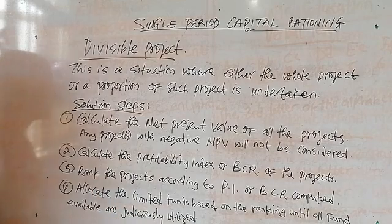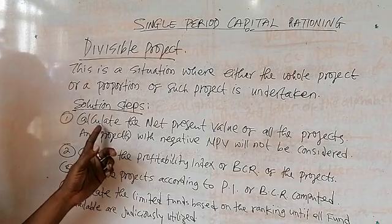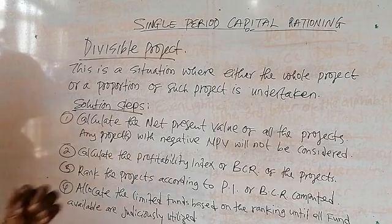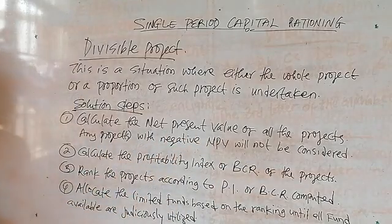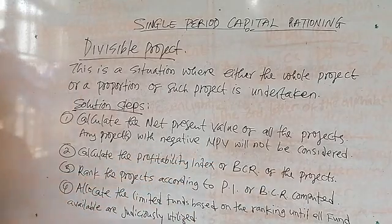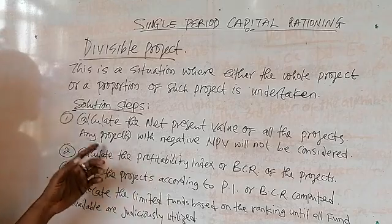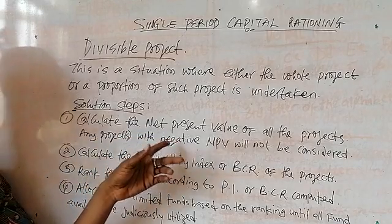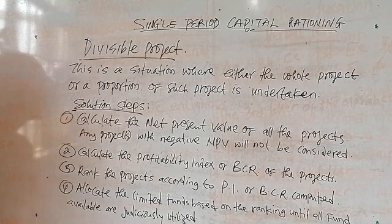The fund available is not enough to invest in all the projects, therefore you have to ration. To know which project to invest in, you calculate the net present value of all the projects. Any project with a negative NPV will not be considered.